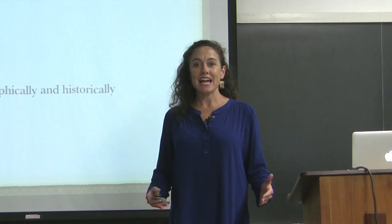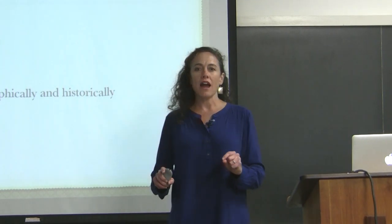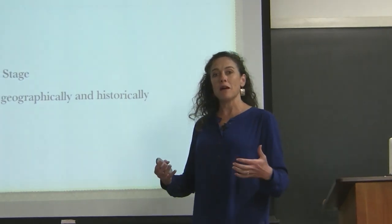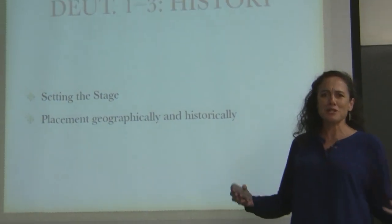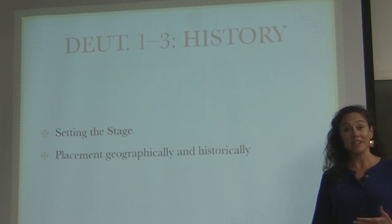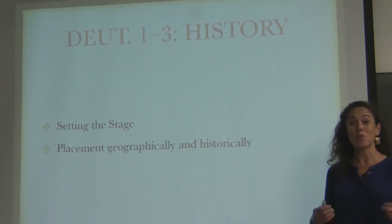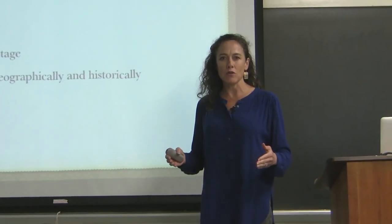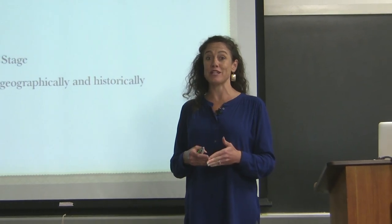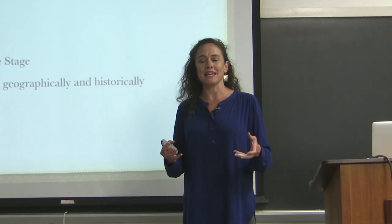We are now going to be moving into Deuteronomy chapters one through three. These are considered to be the historical chapters, and this is all part of the introduction. As we move into the introduction of Deuteronomy, we need to recognize that we're setting the stage for the whole entire book. We need to place ourselves geographically, paying attention to the where, because as we said in the last lecture, the where or the land is very important. We have lots of geographical information in these first three chapters, and we need to look at what is happening with the land.